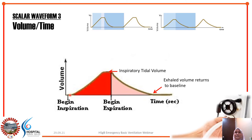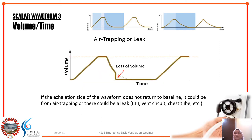Interpreting the graph: the volume should start at zero, rise to your tidal volume — say 450 mL — and then return to zero, meaning 450 mL of air goes in and 450 mL comes back out. If the volume comes up but doesn't return to baseline as expected, it means there is a loss of volume. The problem can be either air trapping or leaking.